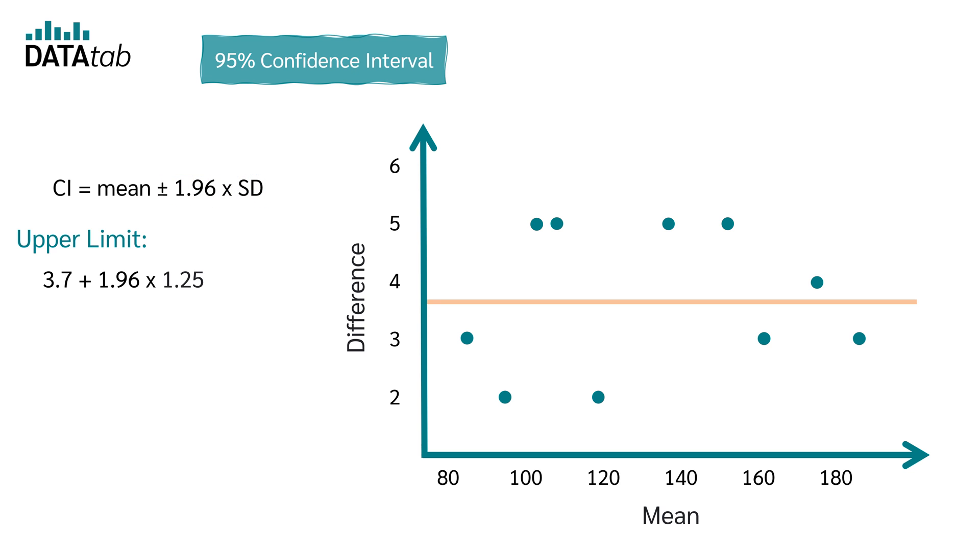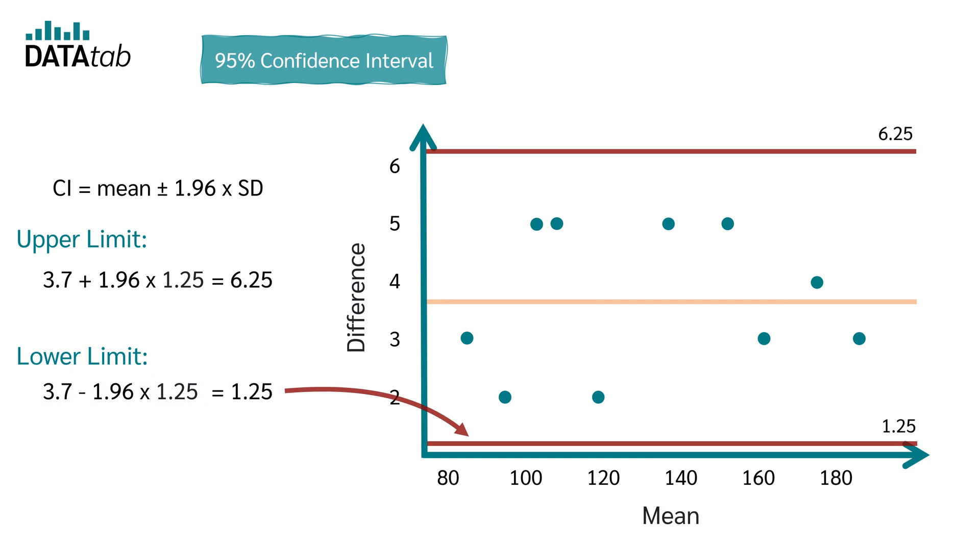So we can calculate the upper limit with 3.7 plus 1.96 times 1.25, which is 6.25. And the lower limit with 3.7 minus 1.96 times 1.25, which is 1.25.